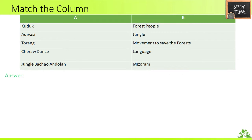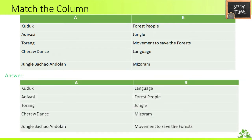Let us see sample questions from this chapter. Match the column — Column A and Column B: Kuduk is a language; Adivasi meaning is forest people; Torang is jungle; Cheer of dance is Mizoram; Jungle is a movement to save the forest.